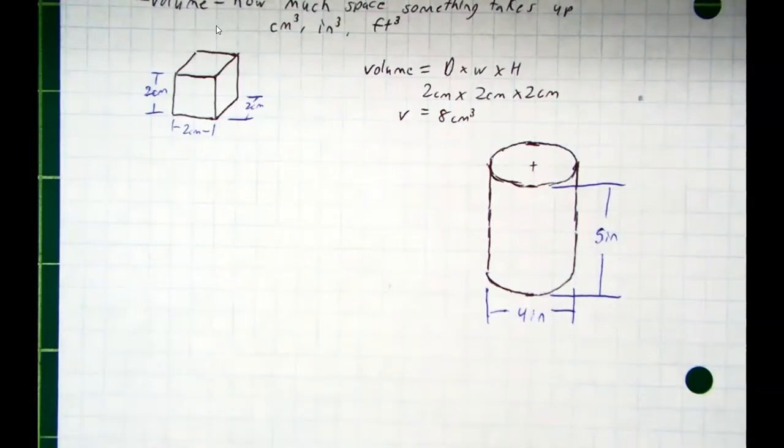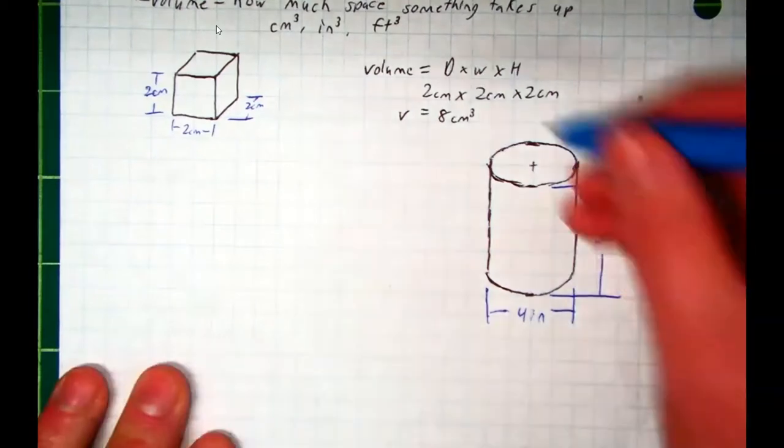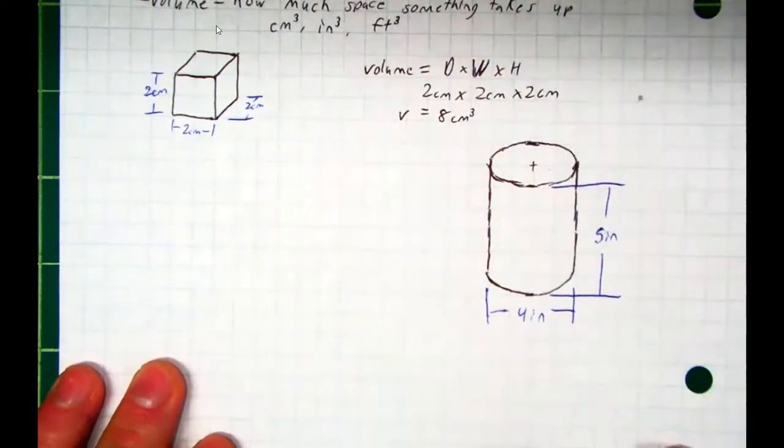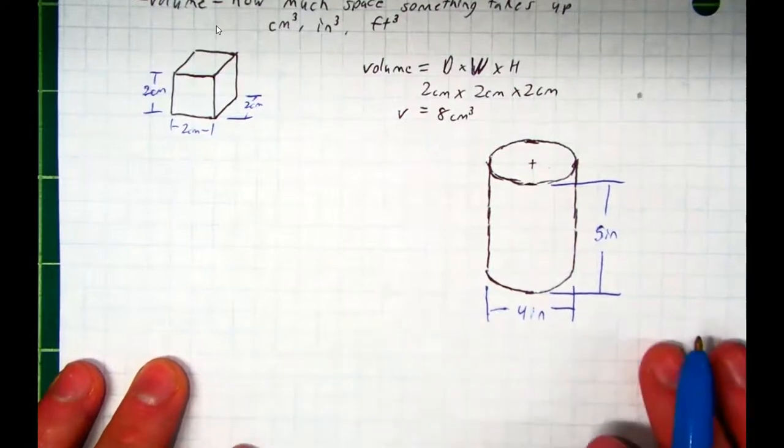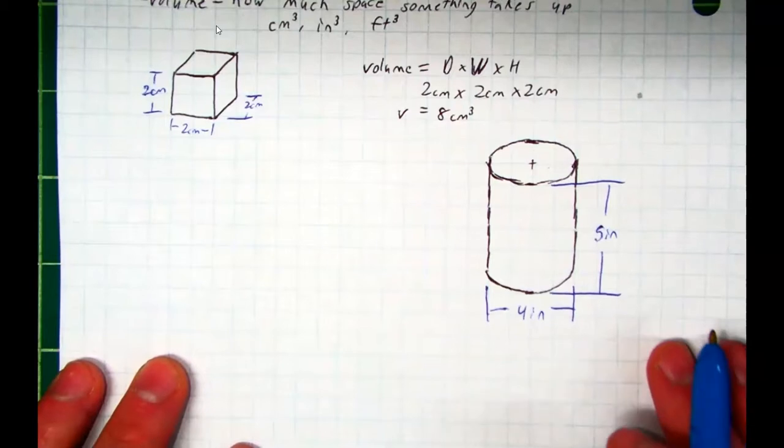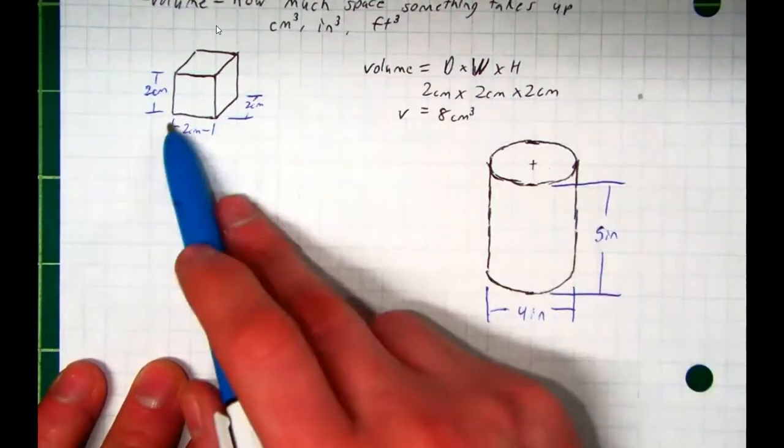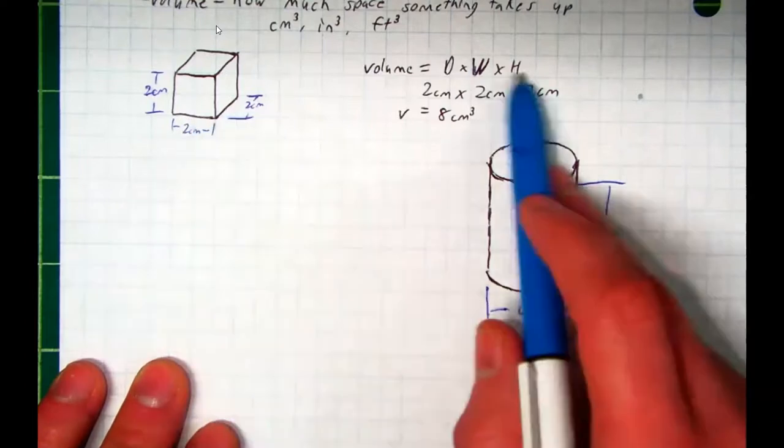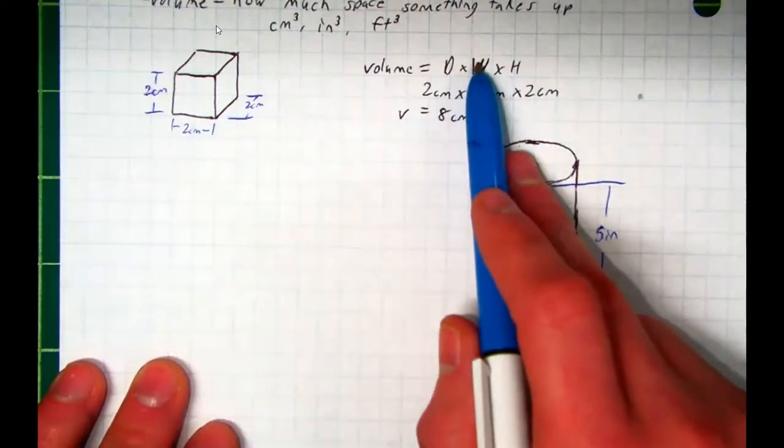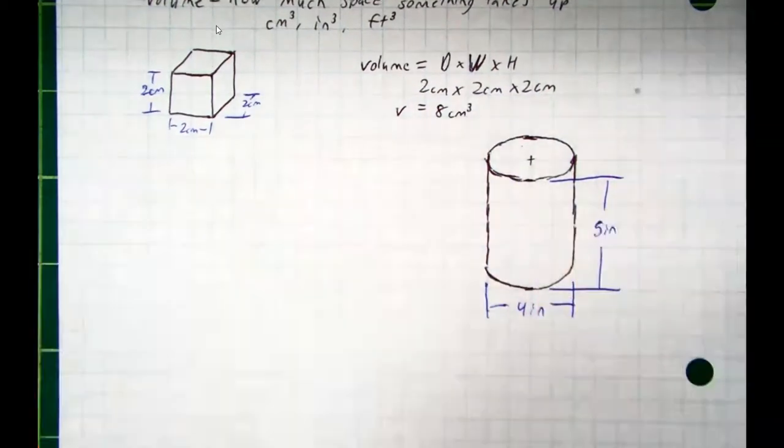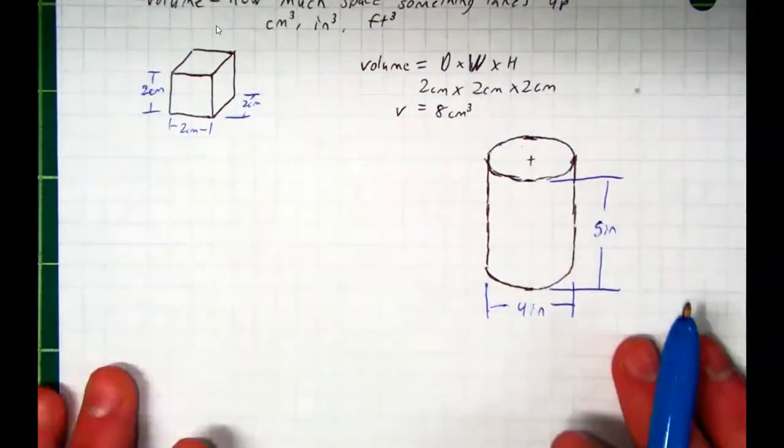Now, what's cool about the formula for volume in general is it's always the same if the shape is uniform. The formula for volume is always base times height. Now, that sounds like area, but if you look here, the area of the base here is the depth times the width, which we say.